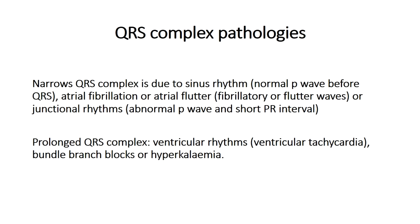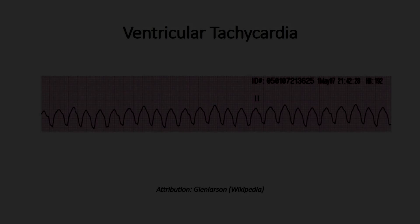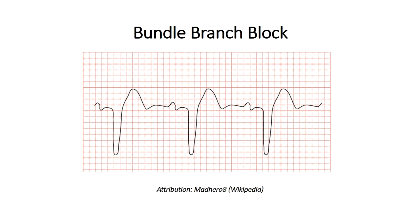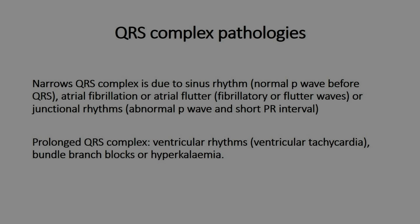Broad QRS complexes are greater than 0.1 seconds (100 milliseconds). The most common causes are bundle branch blocks or abnormal ventricular rhythms such as ventricular tachycardia, where you'll generally see no P waves and broad QRS complexes. Other causes include hyperkalemia — abnormally high potassium levels — which also causes widening of the QRS complex.